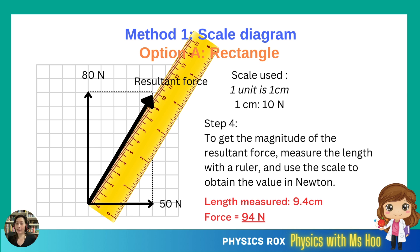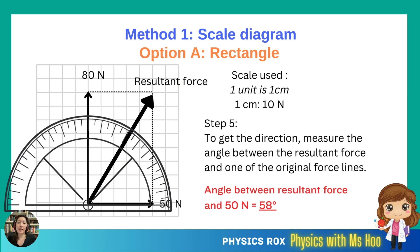Remember that force is a vector, and vectors have both magnitude and direction, which means we also need to determine the direction in which the resultant force is acting. We would measure the angle by taking a protractor. To get the direction, we will measure the angle between the resultant force and one of the original force lines. Usually the question would specify which force line is the base from which to measure the angle. In this case, let's say we want to measure the angle between the resultant force and the 50 N horizontal line. Using your protractor, place it on the diagram and measure the angle out. We have found the angle to be 58 degrees. And that's how we use the rectangle method to determine the resultant force.